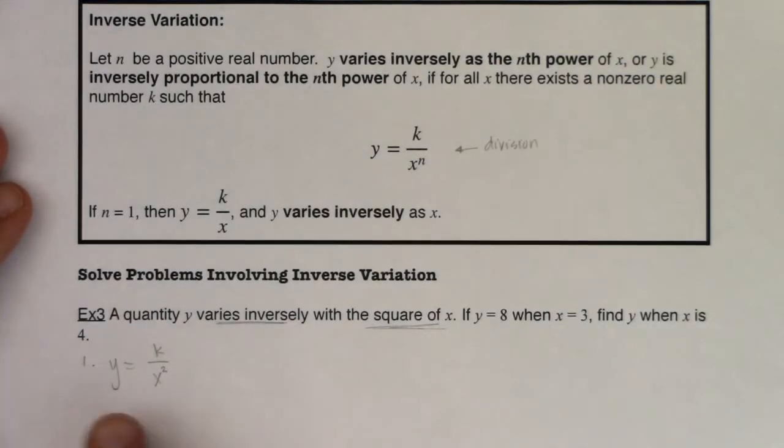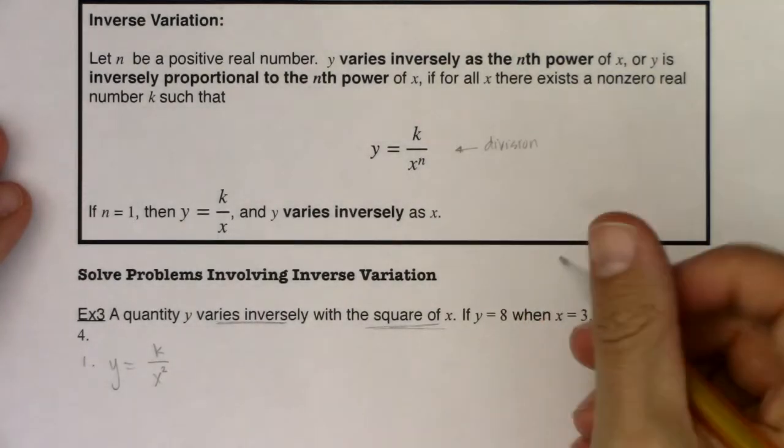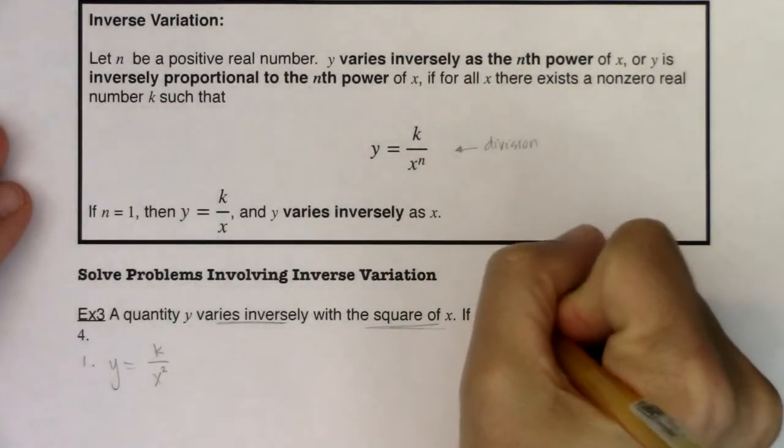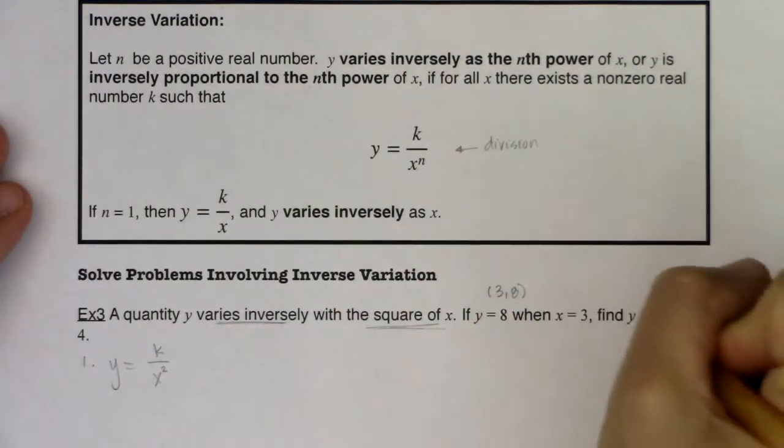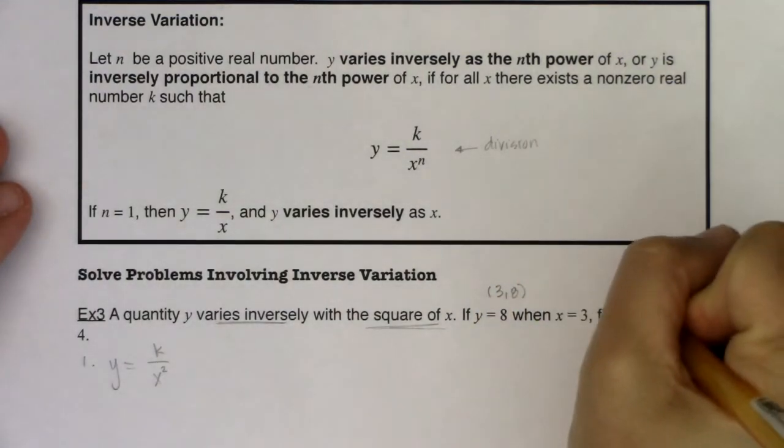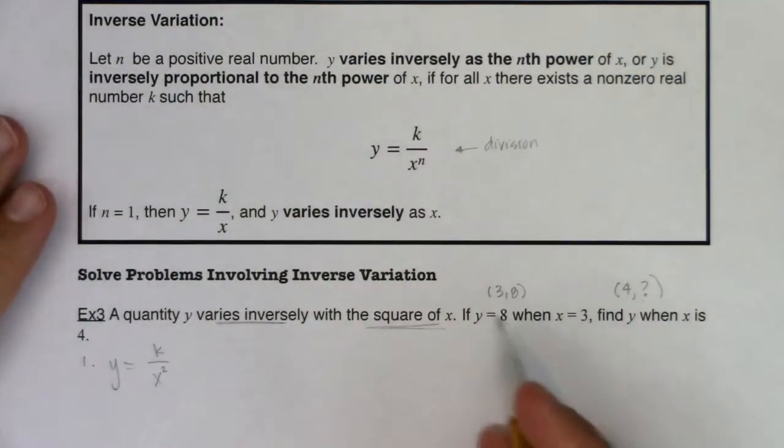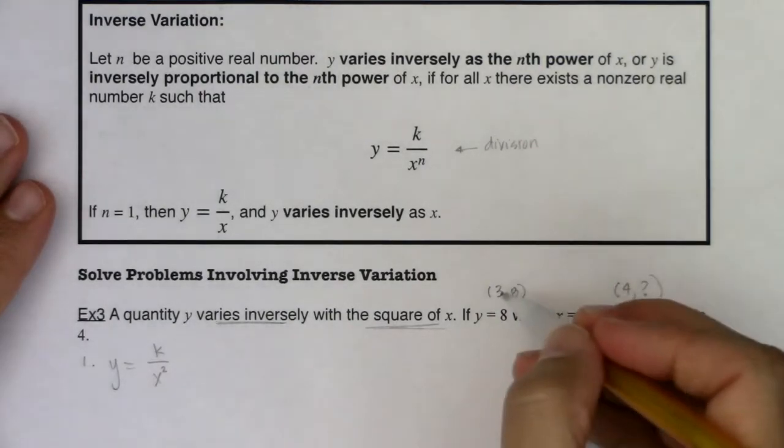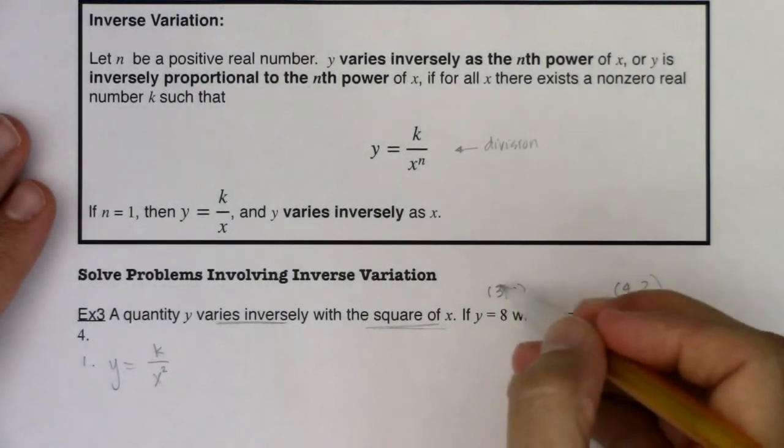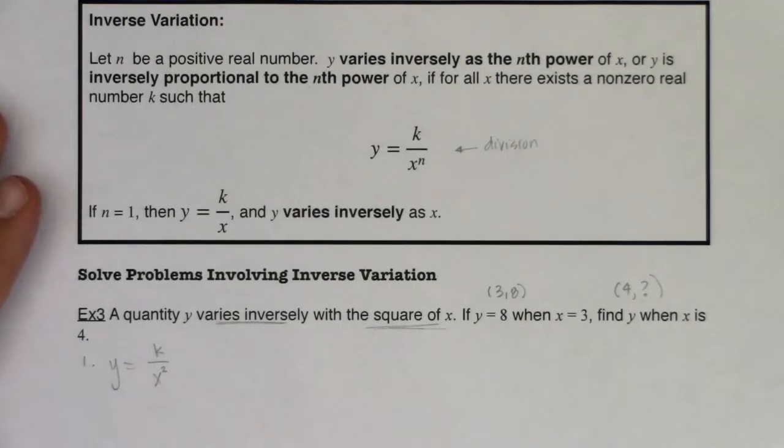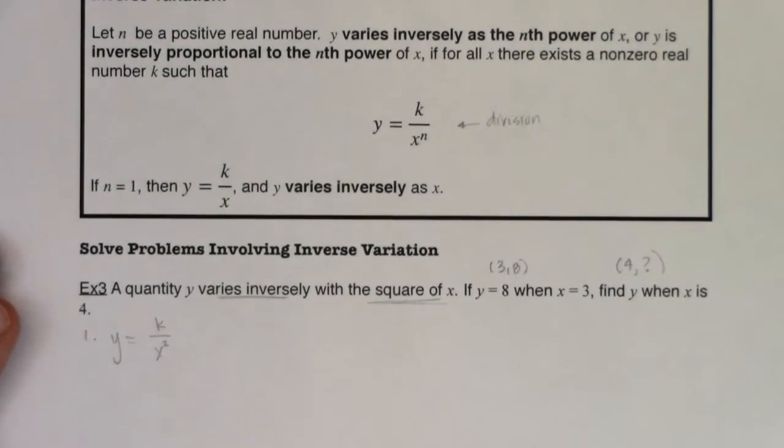Step two would have been to substitute given values of the variables to find this k. Well, I have a complete ordered pair here. I see it's (3, 8). I have an incomplete ordered pair here. I've got (4, something), because it says find y when x is 4. Well, I know x is 4, but I don't know the corresponding y value. So always use the complete ordered pair and plug in. And be careful, I can't tell you how many times students forget to square this 3. You plug in the 3, you call it a day, but then that's not really the answer to the question. So I'm going to scooch this up so we have some room.